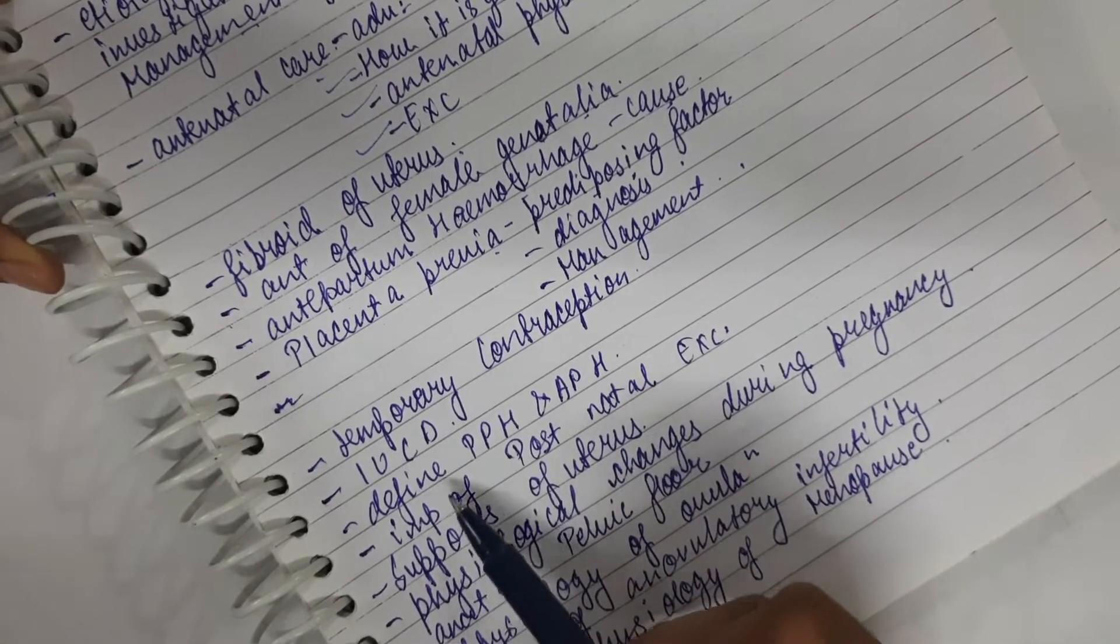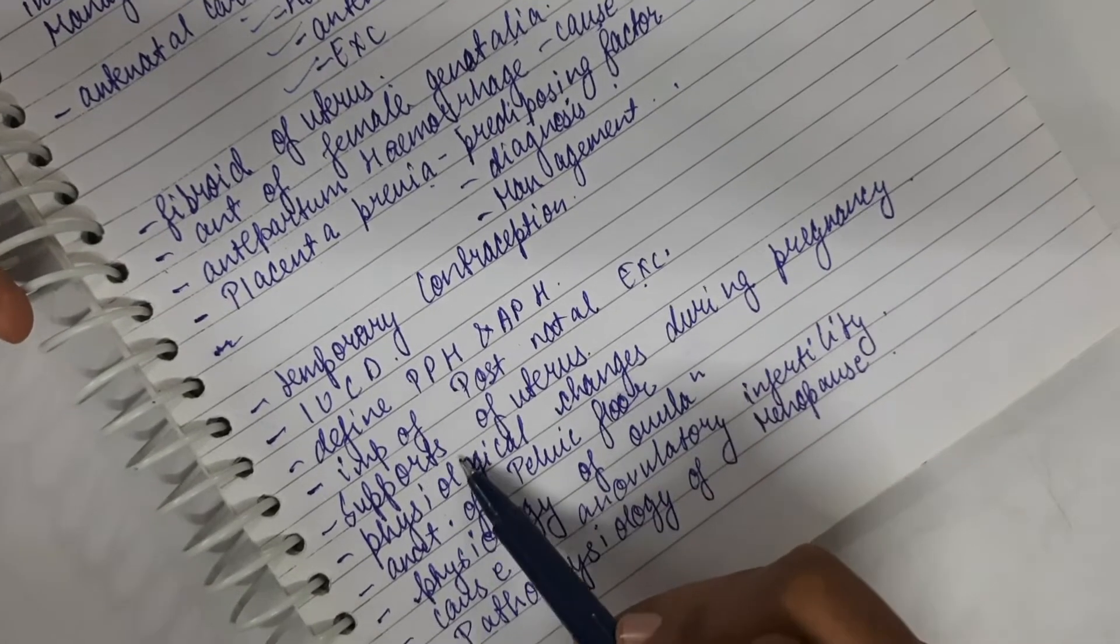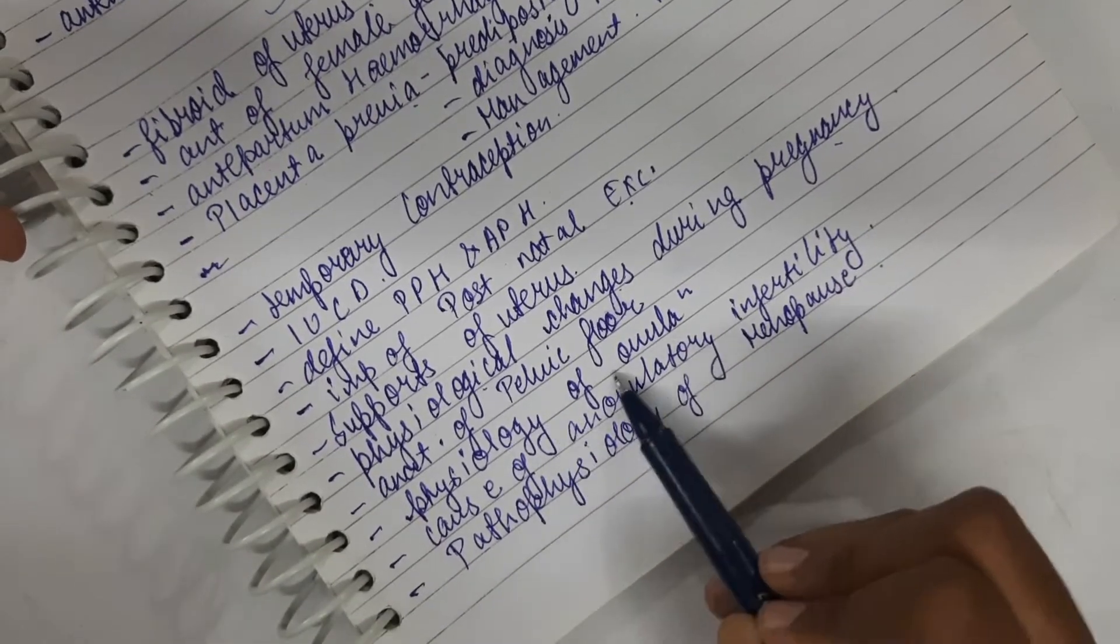Temporary contraception, IUCD, define PPH and APH, importance of postnatal exercise, support of uterus, physiological changes during pregnancy.